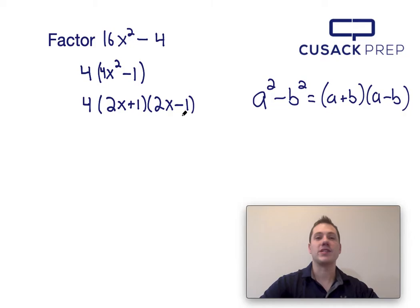And there you have it. That's how you factor 16x squared minus 4 using the difference of squares equation. Thank you for watching.